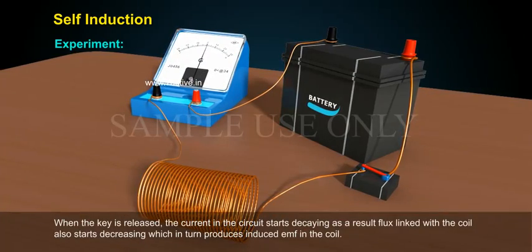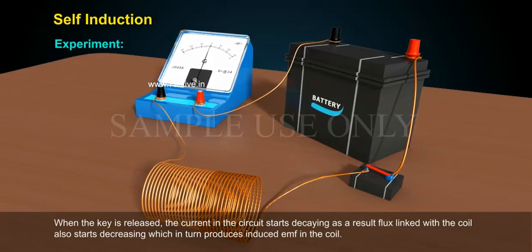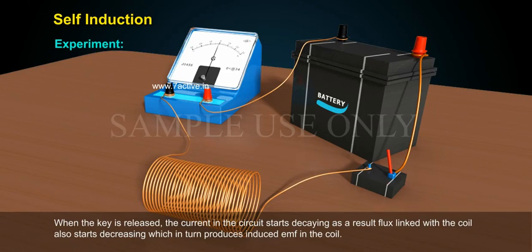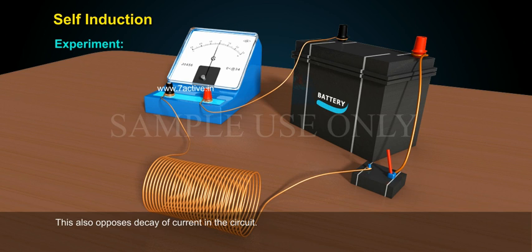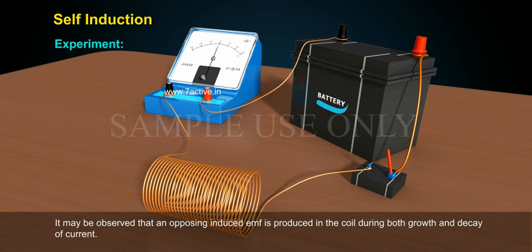When the key is released, the current in the circuit starts decaying. As a result, the flux linked with the coil also starts decreasing, which in turn produces an induced EMF in the coil. This also opposes the decay of current in the circuit. It may be observed that an opposing induced EMF is produced in the coil during both growth and decay of current.